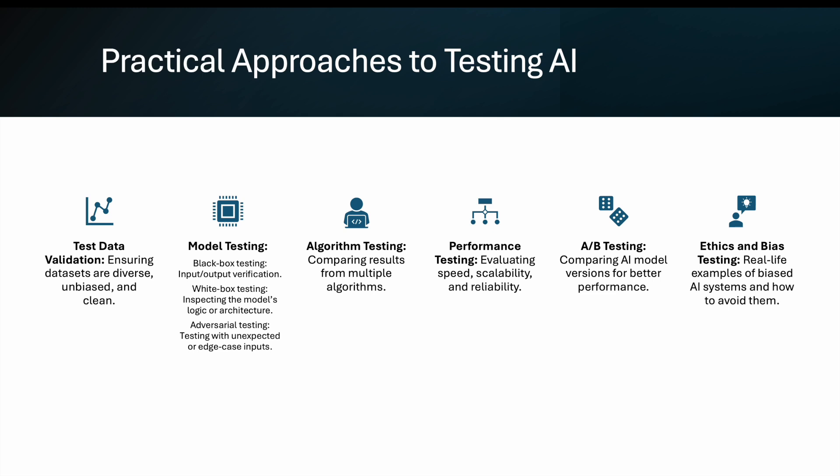Performance testing for AI is the same as for any normal product — the same approach applies. A/B testing means comparing AI model versions for better performance; if your product is new, compare with proven models, or compare with other third-party tools. Ethics and bias testing is very important — if the AI is not ethical, users can violate rules and companies can face trouble. It should be fair for all scenarios and recognize what could create controversy in real life.